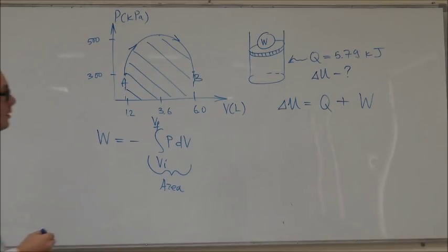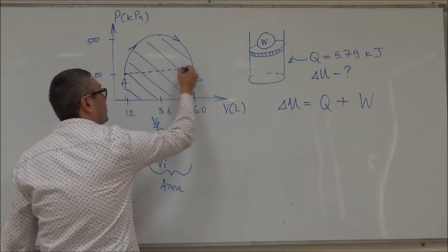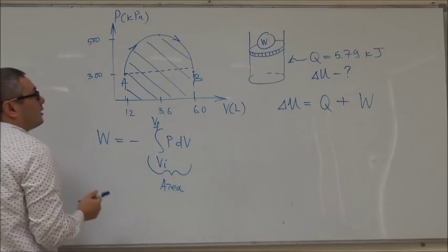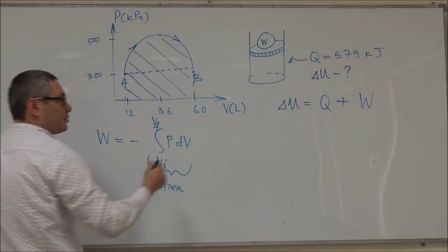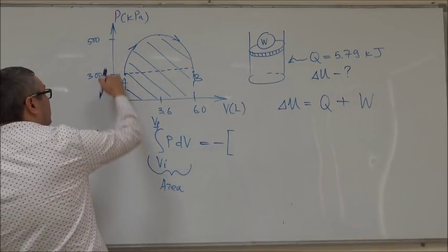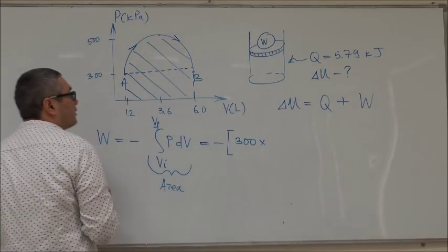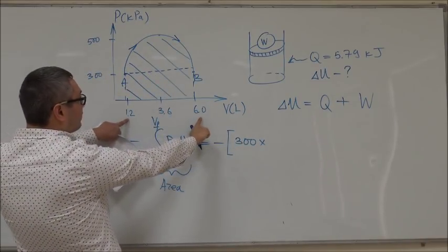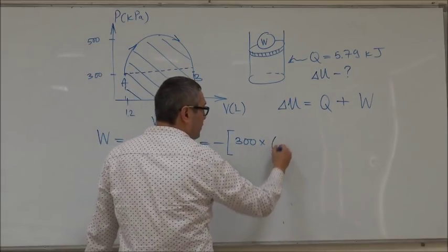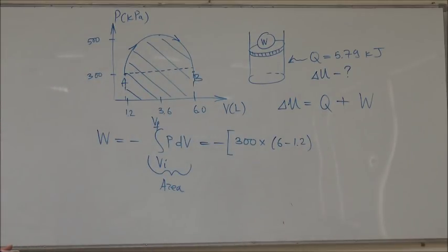So the question is then how do we calculate that area? Well we can divide it into two parts and we can first calculate this side, the rectangular part. The rectangular part is equal to, so you have this minus sign, the rectangular part is 300 times this change in volume which is 6 minus 1.2.